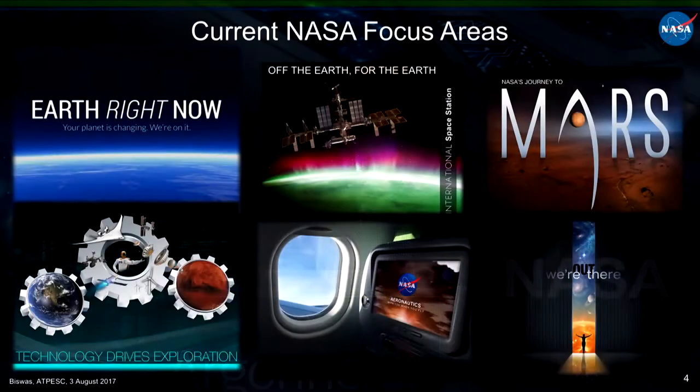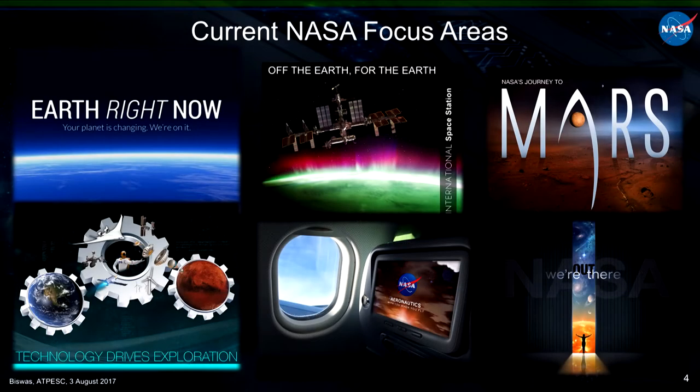For the budget NASA gets — about $19 billion a year — there are six focus areas. The first is Earth: a lot of work on Earth sciences and Earth-observing satellites. The second is off the Earth — looking at the station, with huge partnerships with commercial companies like SpaceX and Boeing for crew and cargo.